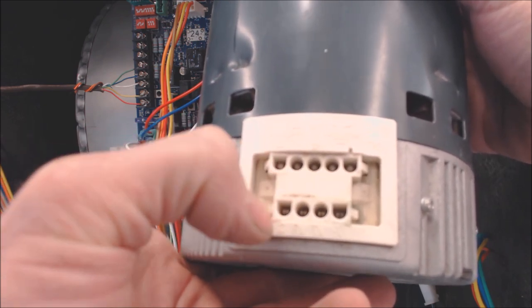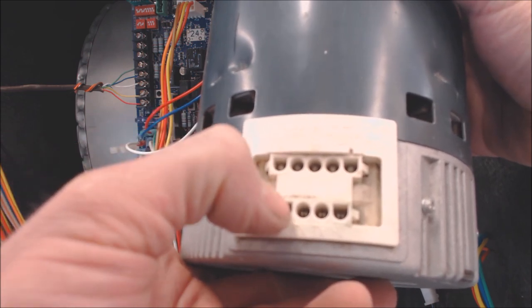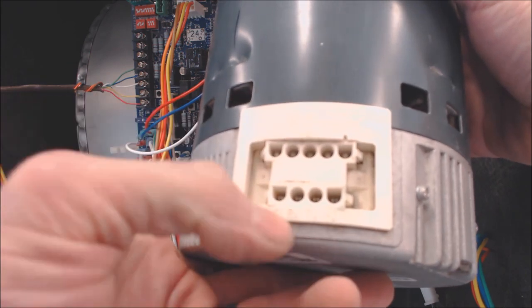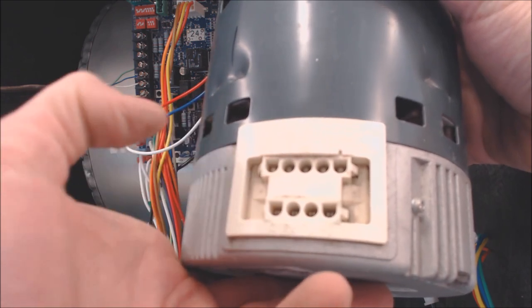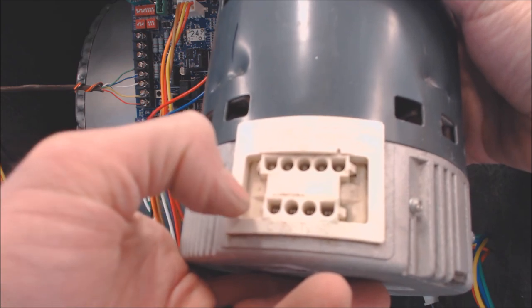So you can have the hot go in R and the common go in C. Or you can actually have the 24 volts go in the C and common go to the R. It does look like though that you should put the 24 volt hot in the R and common in the C. So I would recommend just going ahead and doing that if possible.